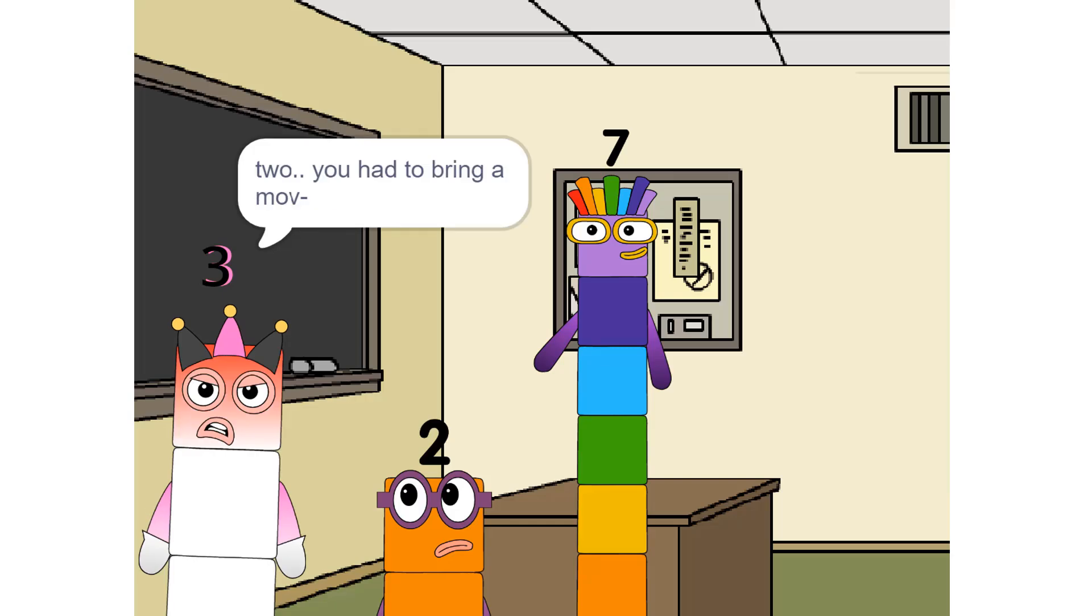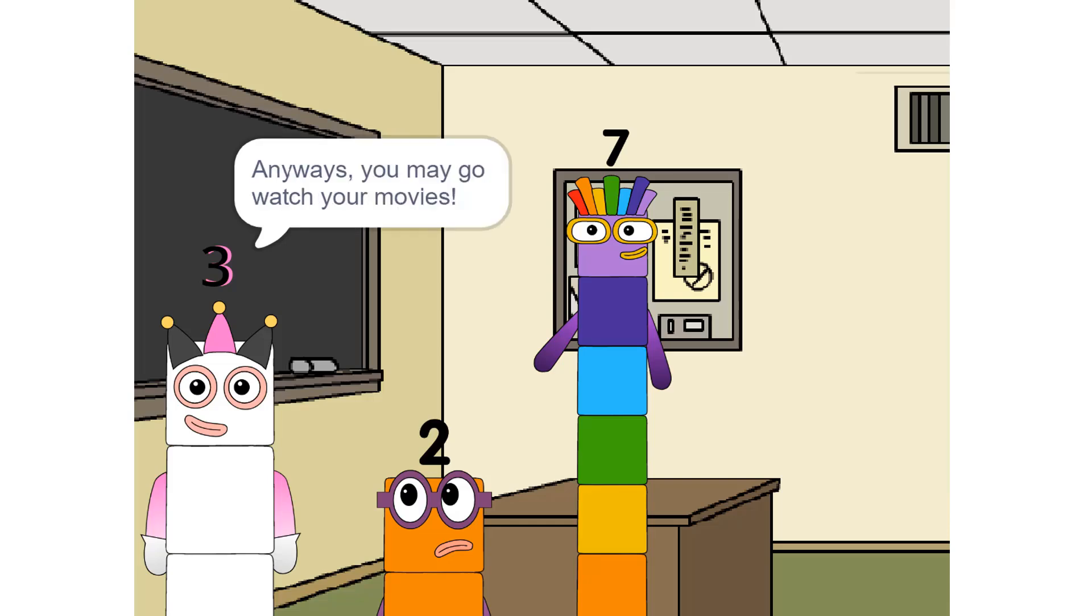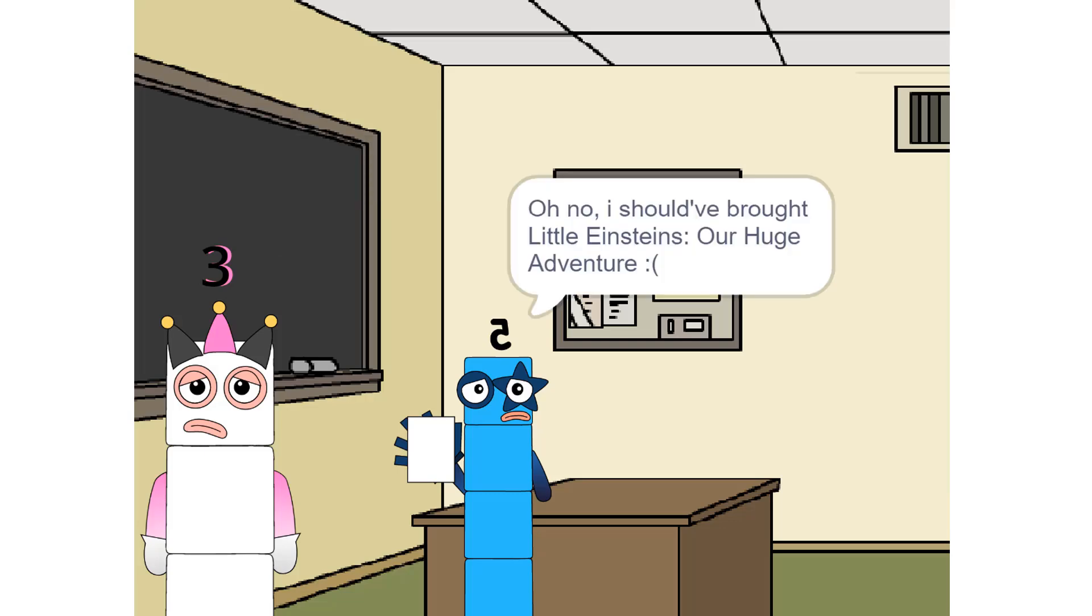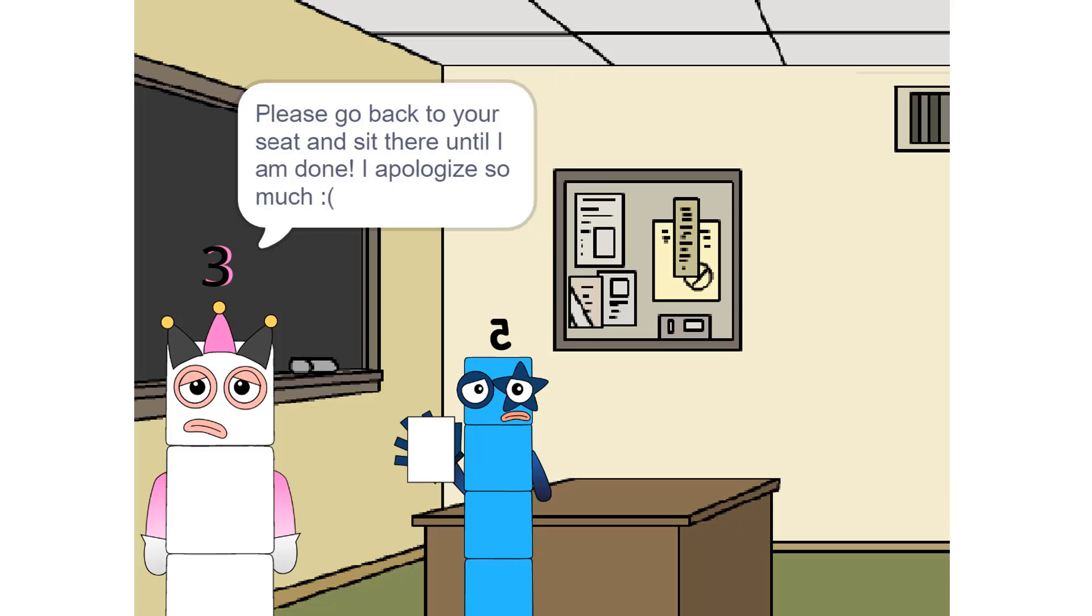You can— Two, you had to bring a movie. I want to watch two rounds. Oh okay, anyways you may go watch your movies. I brought Slenderman. Sorry Five, that movie is rated PG-13 in an inappropriate kind of way. You aren't in trouble, you just won't get to watch it. Oh no, I should have brought Little Einsteins Our Huge Adventure. If you bring Little Einsteins Our Huge Adventure, which is rated G, you would get pizza, soda, and popcorn. Please go back to your seat and sit there until I am done.